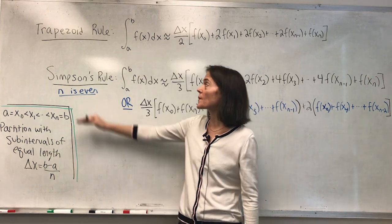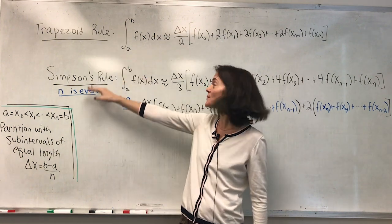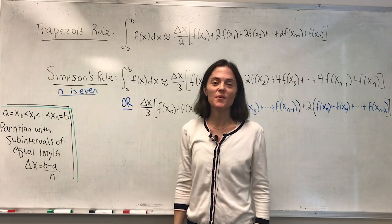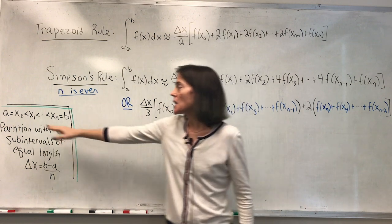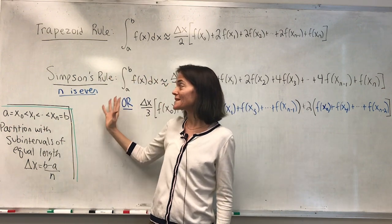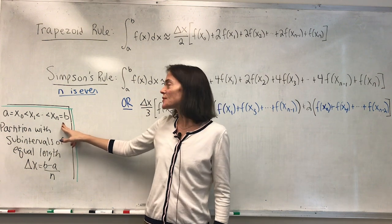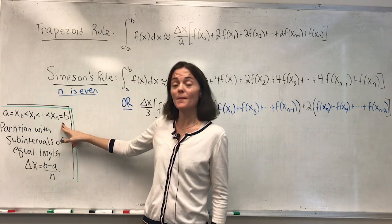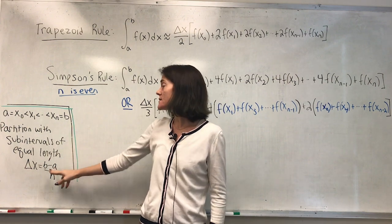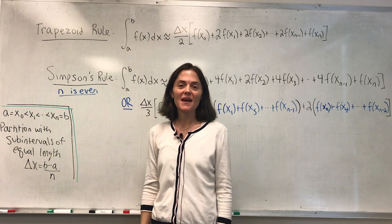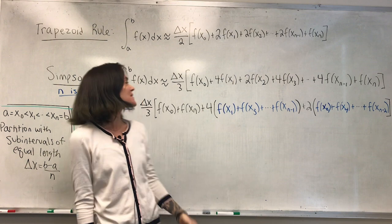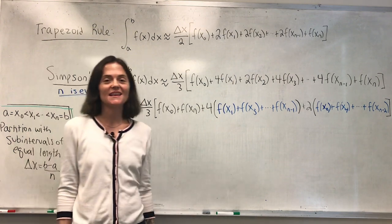I'd like to do an example where we use both the trapezoid rule and Simpson's rule, and both of these come up in approximating the definite integral. Throughout the trapezoid rule and Simpson's rule we use this standard partition of the interval from a to b, where you take sub-intervals of equal length delta x, which is b minus a over n. It's also important as we saw in class that with Simpson's rule that n is even.